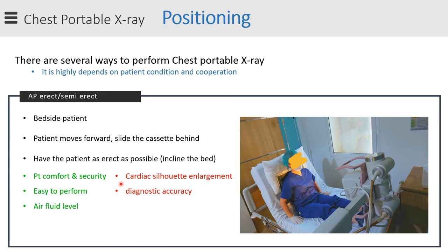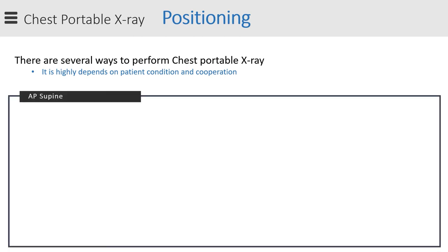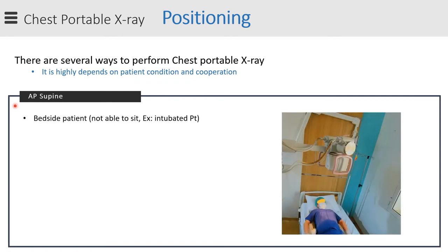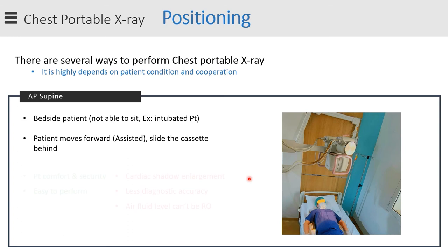The main disadvantage is that it's AP rather than PA, so you have cardiac shadow enlargement and diagnostic accuracy is likely less than the PA method. Finally, the AP supine position should be your last choice if erect x-ray is not possible. This is almost the same as the previous method, only the patient is completely supine, and again you need to slide the cassette behind the patient's chest.